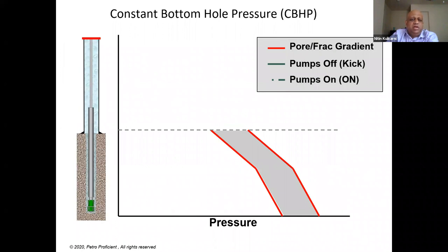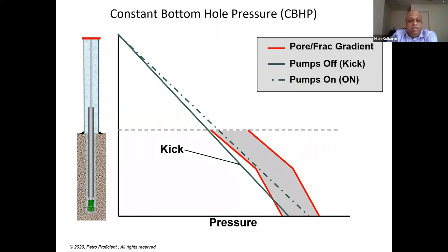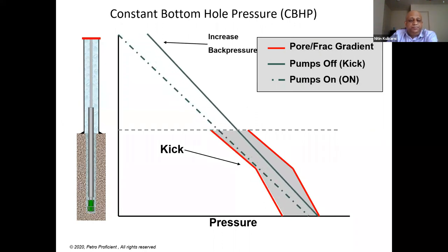How does constant bottom hole pressure technique work? When you switch off your pump, you lose your friction pressure, and it may happen that you go below your pore pressure. With MPD, you can essentially maintain pressure within your pore pressure value by increasing your back pressure. This is one of the main applications of constant bottom hole pressure — adjusting the back pressure when needed to ensure your pressure remains within the pore pressure and fracture gradient profile.